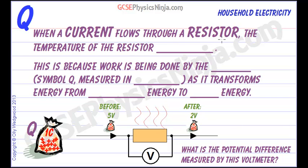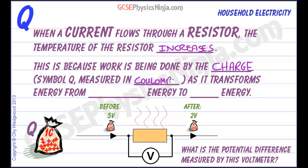When a current flows through a resistor, the temperature of the resistor increases because work is being done by the charge — those electrons. Charge is represented by the symbol Q, and we measure collections of charge in coulombs. So work is being done by the charge, these coulombs, as it transforms energy from electrical energy to heat energy.